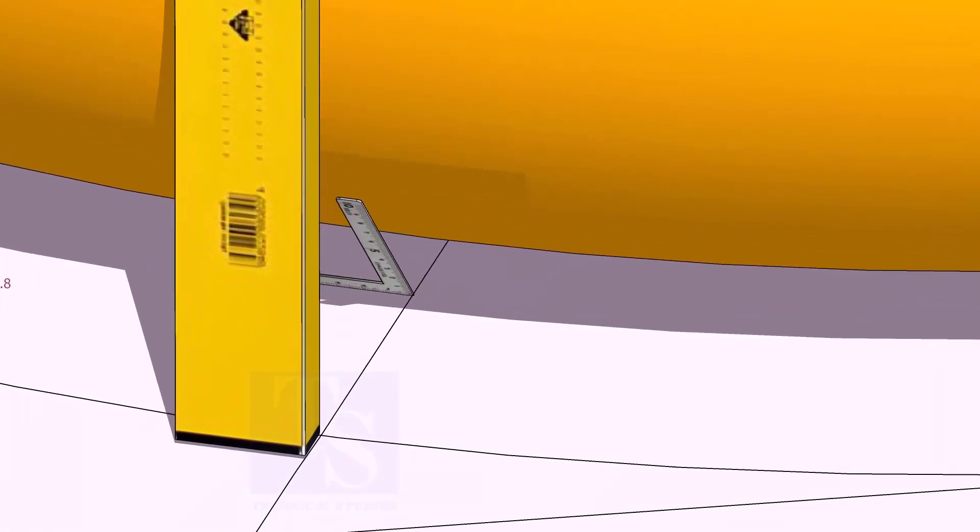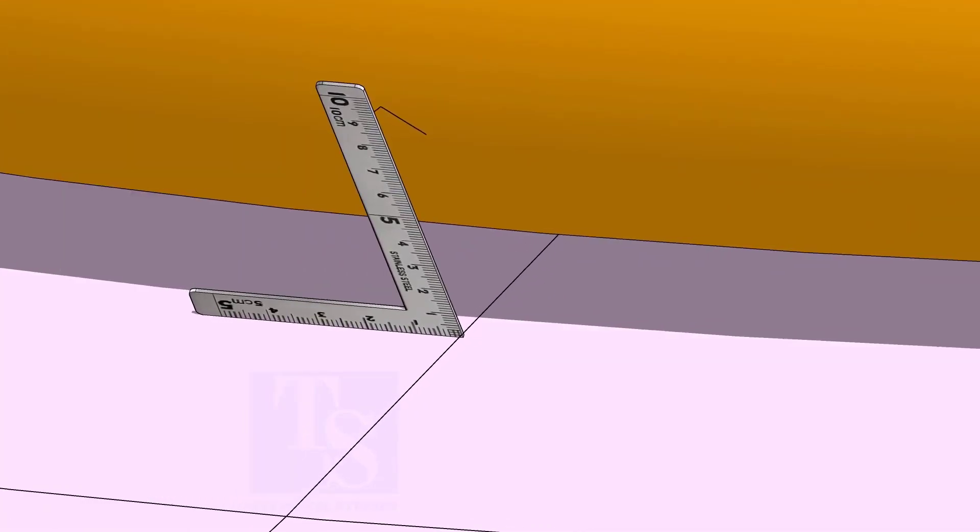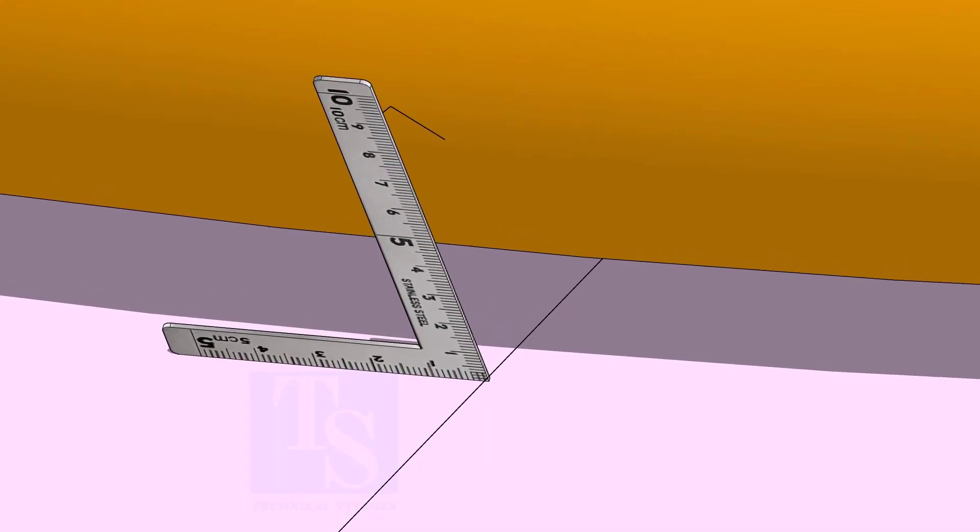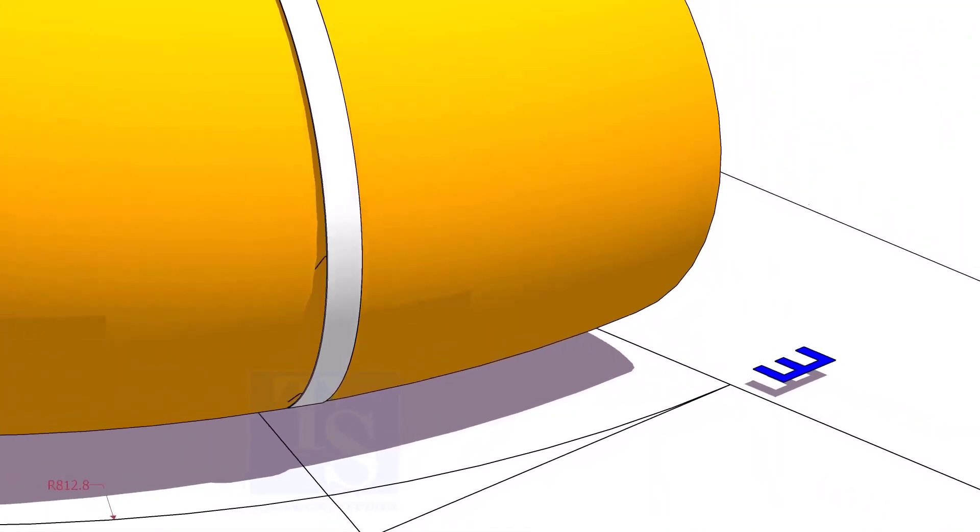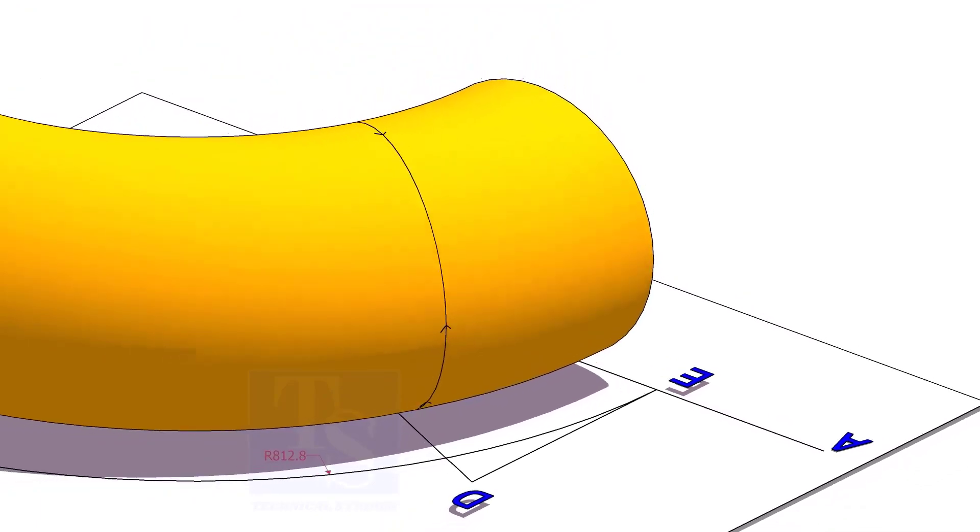At the bottom side, use a small right angle and transfer the line to the elbow on both sides. Use a bend scale and connect the marks to form a circle around the elbow.